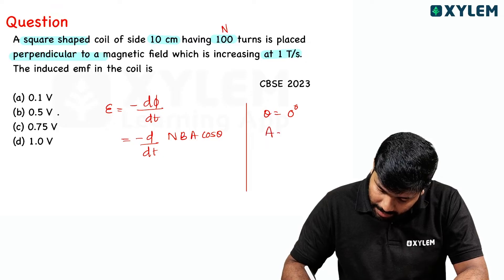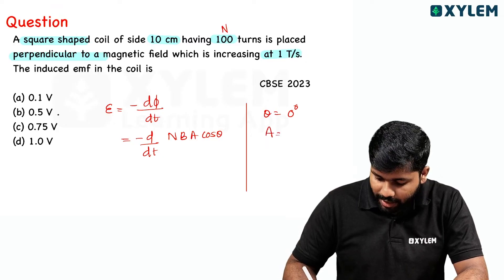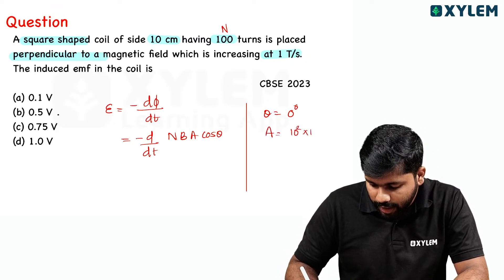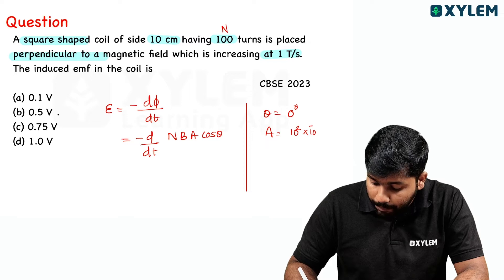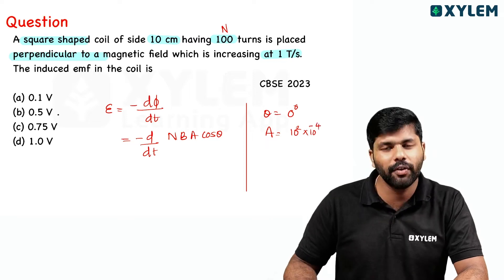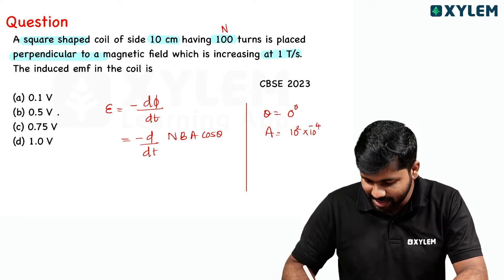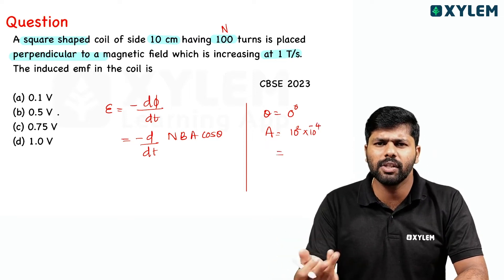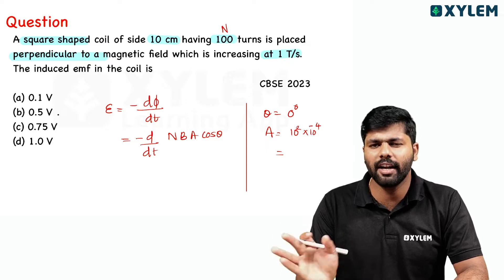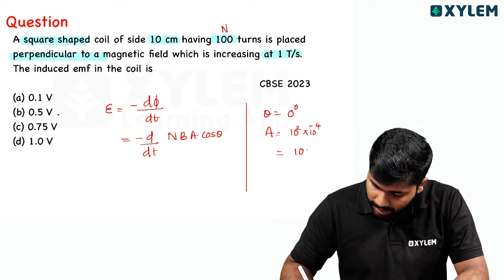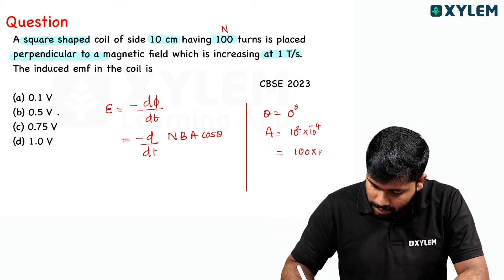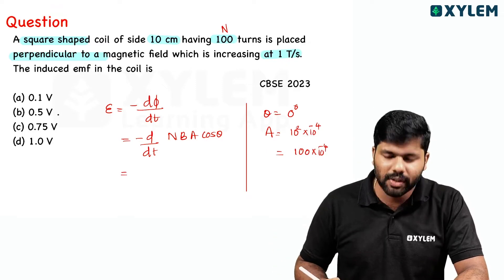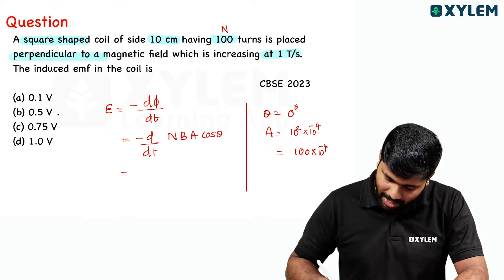Area: 10 centimetres squared, that is 10 squared which is 10 raised to minus 4 metres squared. So area is 100 into 10 raised to minus 4. So area equals 10 raised to minus 2 metres squared.